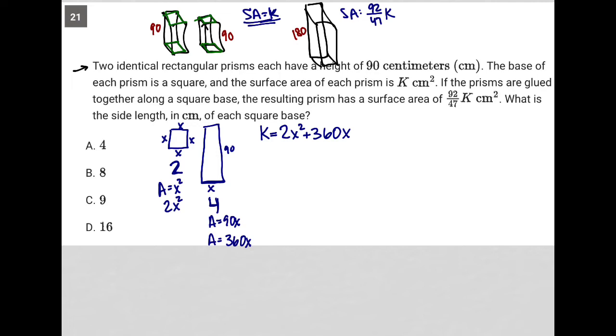For this large rectangular prism, the new prism, I have a different set of things. Well I still would have my top and bottom here. They're still going to be my squares. So I'm still going to have this 2x squared. But in terms of my rectangles now, they're no longer 90, my height is now 180. So I'd have 180x for my area. But I still have four of them. So I'd have four times 180 which is 720. So this would become 720x. Which means that 92 over 47k is equal to 2x squared plus 720x.